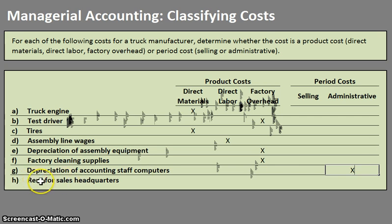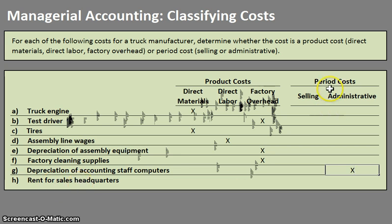Last but not least, we have the rent for the sales headquarters. Since it is not the factory, it will be a period cost. And since it's not administrative but rather selling, it is a selling period cost.